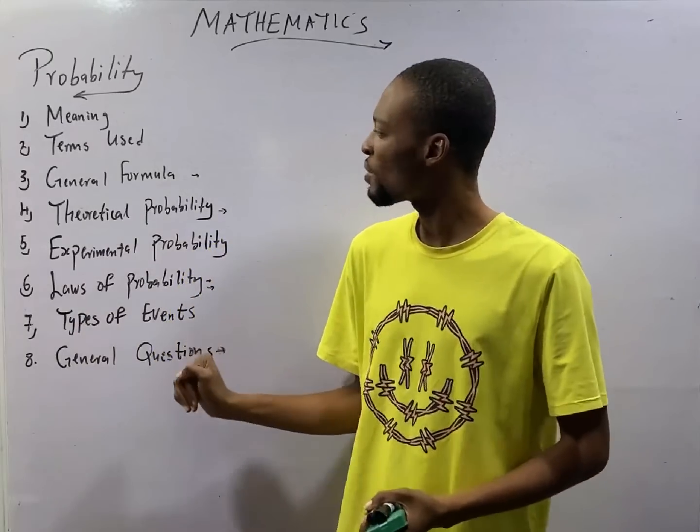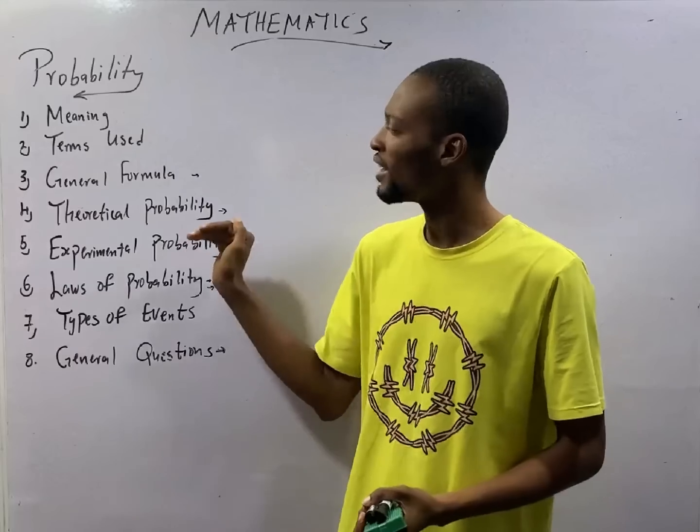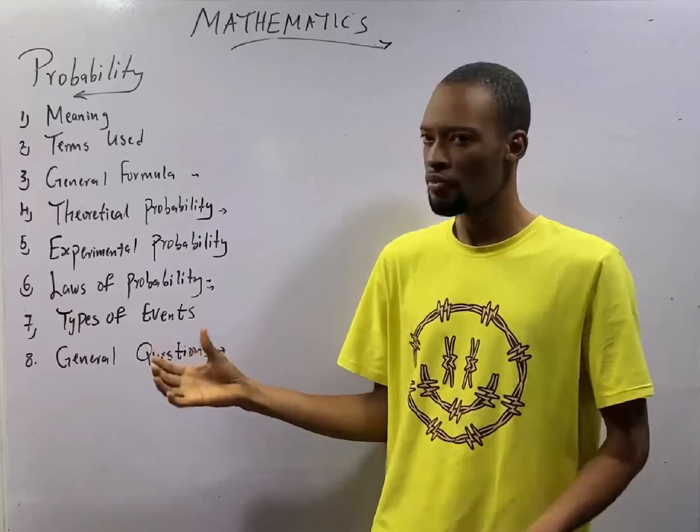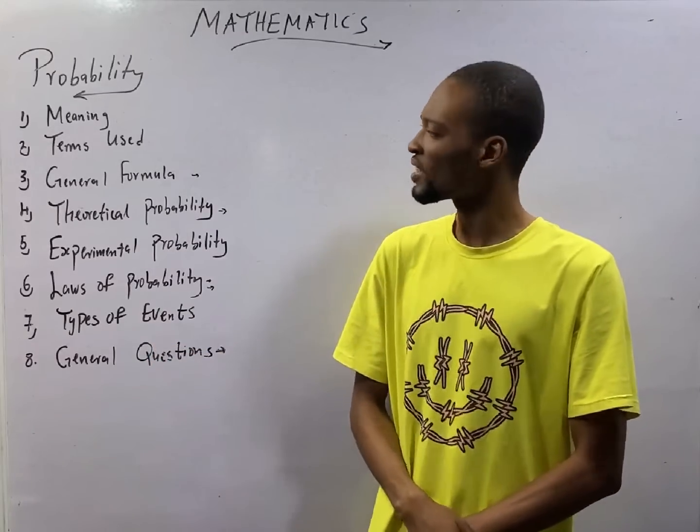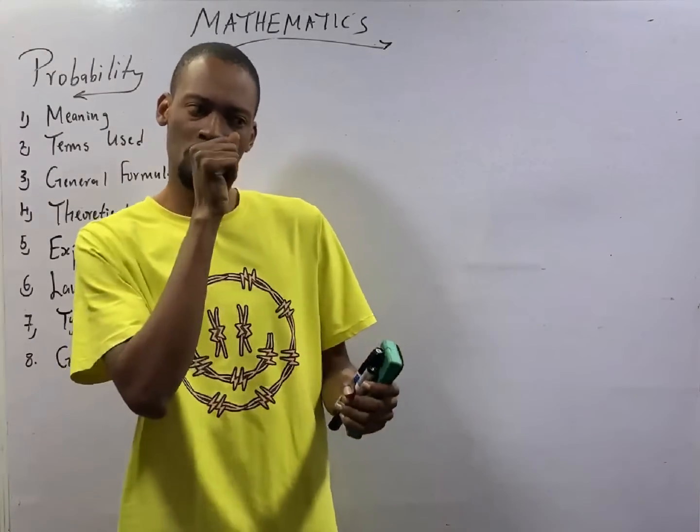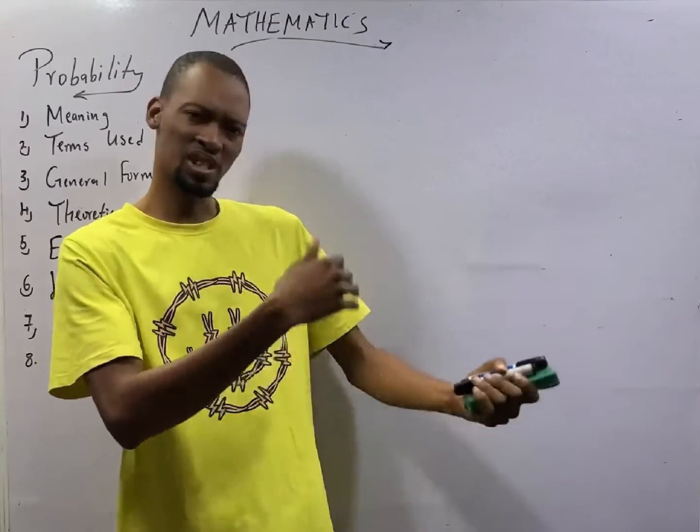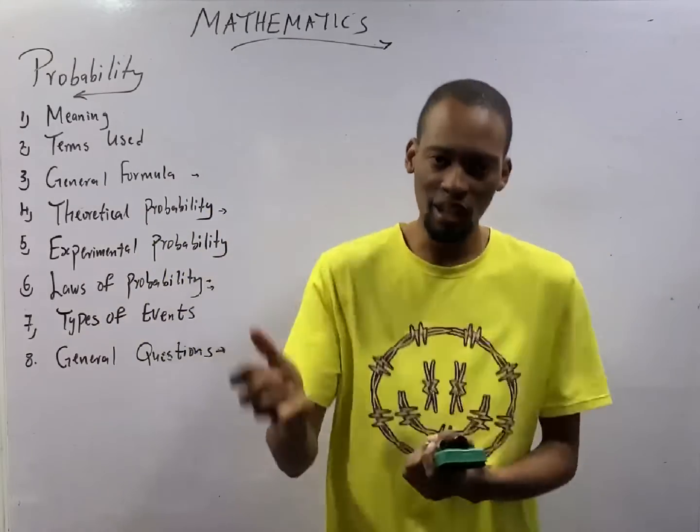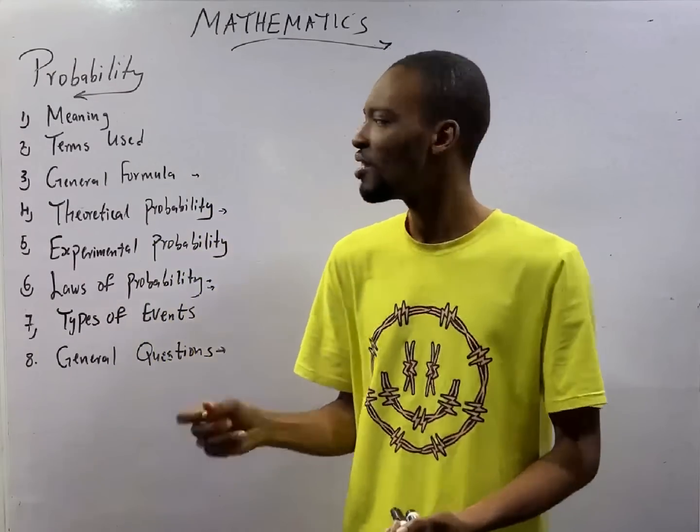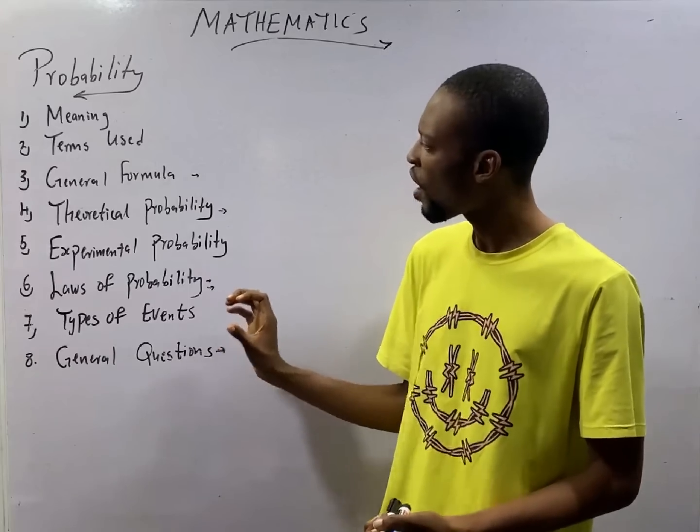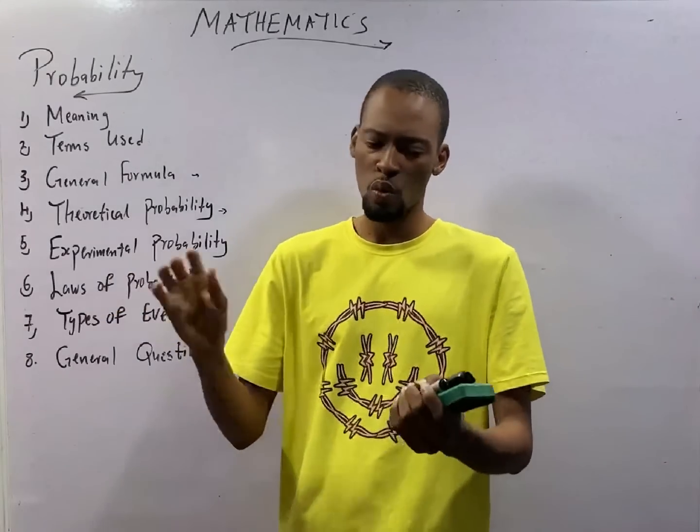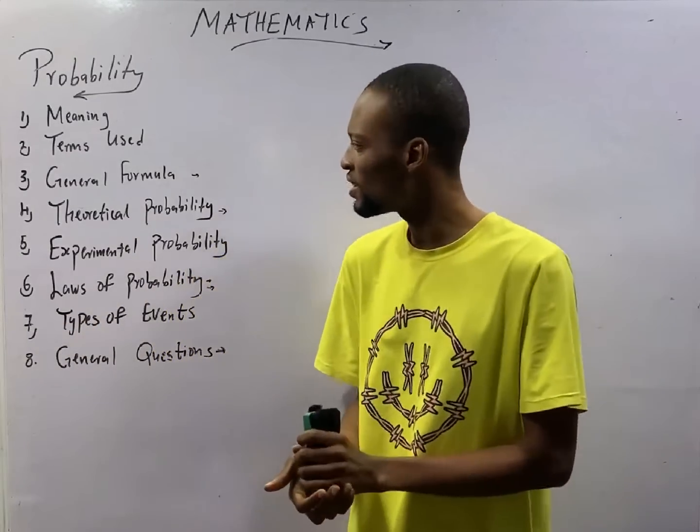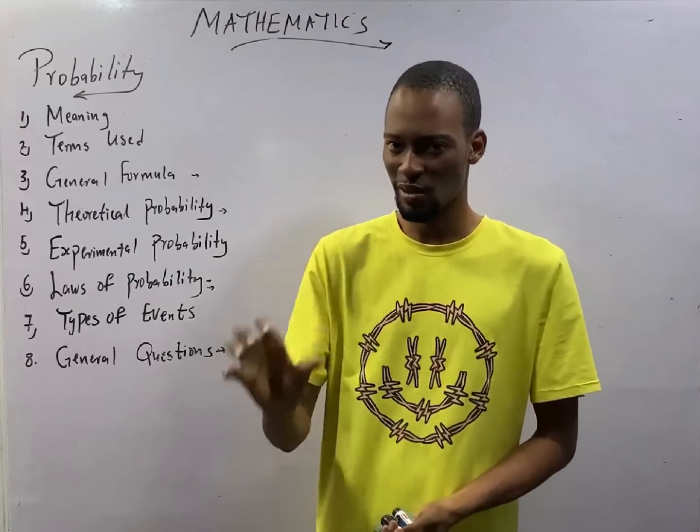In this episode, we shall be looking at general formula of probability. General formulas used in probability. Remember, we have been able to establish that probability refers to possibility, the chance of something happening, the likelihood of events taking place. If that is true, what is the general formula for probability? What is the general shape questions take when it comes to probability? This you will learn in this episode.